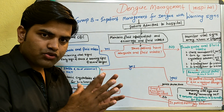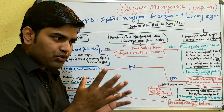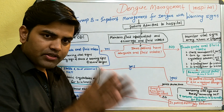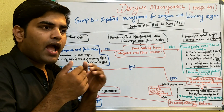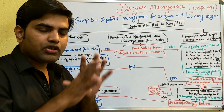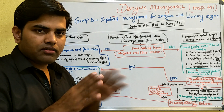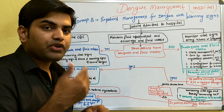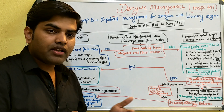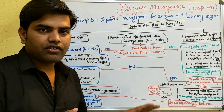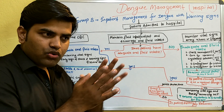To prevent dengue infection spreading to other household members, make sure the patient uses a bed net during fever. Other household members should also use mosquito repellent, kill all mosquitoes in the home, and address all sources where mosquitoes can breed. Finally, look for any warning signs.